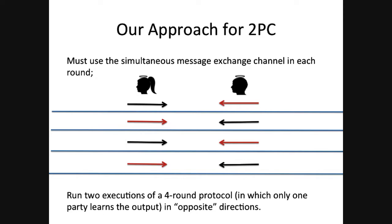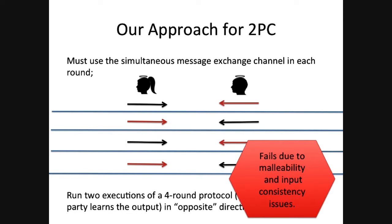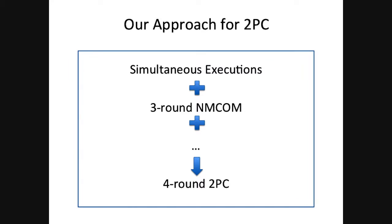What we're going to do instead: take the Katz-Ostrowski protocol and run it in two different directions, so each party gets the output in one direction. But there are issues — we need to ensure everybody uses the same input in both executions, and there is a malleability issue where the adversary can make messages dependent on the honest party's input. The two main ingredients to remember are: we run two simultaneous executions of the same protocol, and we use a non-malleable commitment, plus other tools, to build our 4-round 2PC protocol.